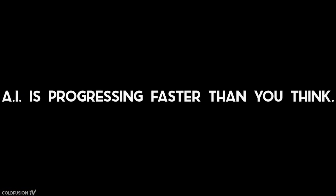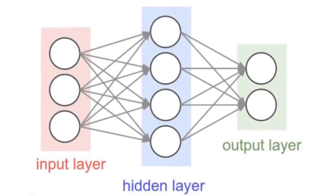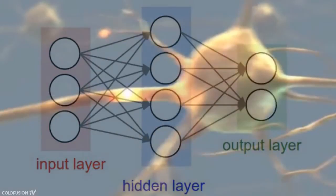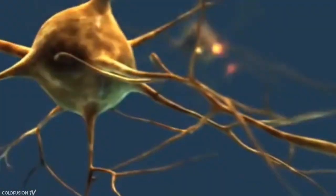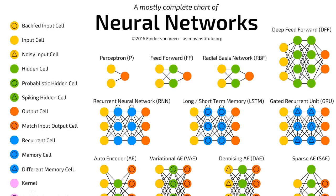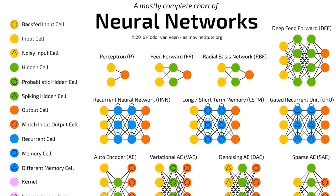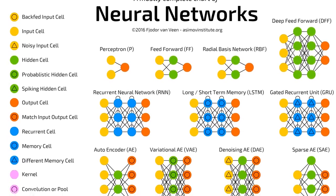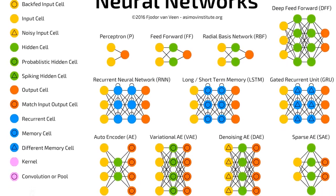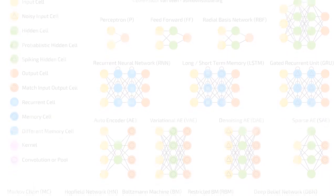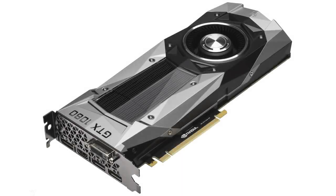Before we dive straight into the AI, we need to build a bit of context. The type of AI we're about to look at is called a neural network — basically a computing system modelled after the human brain. There are processing nodes that act as neurons, and the neuron layers behave as segments of the brain. This concept has been around since the 1980s, but it's only become feasible in the last five years due to GPUs with hundreds of cores being cheap and accessible.